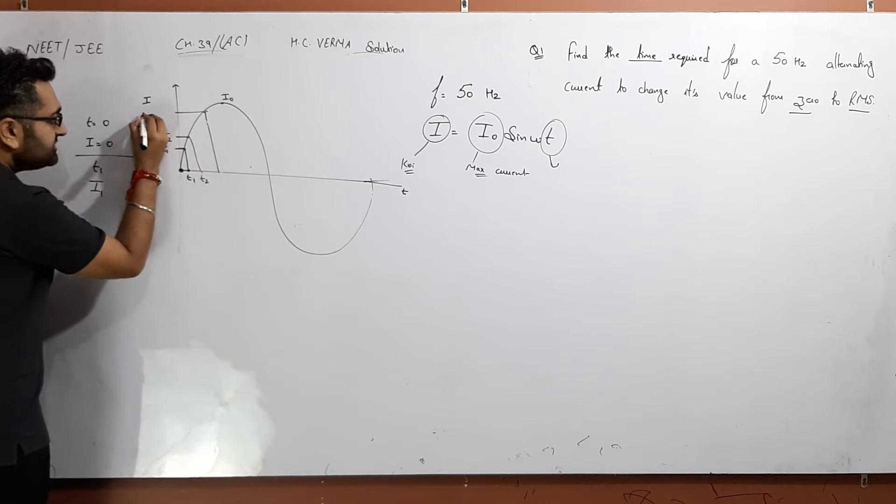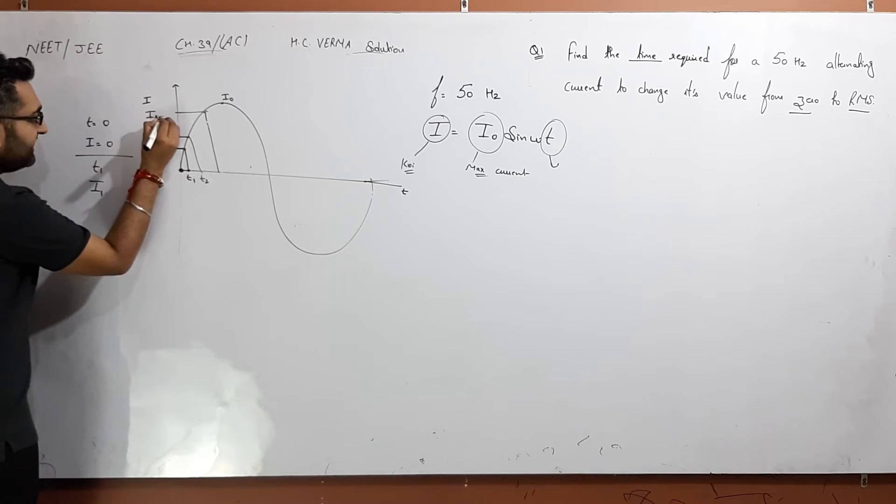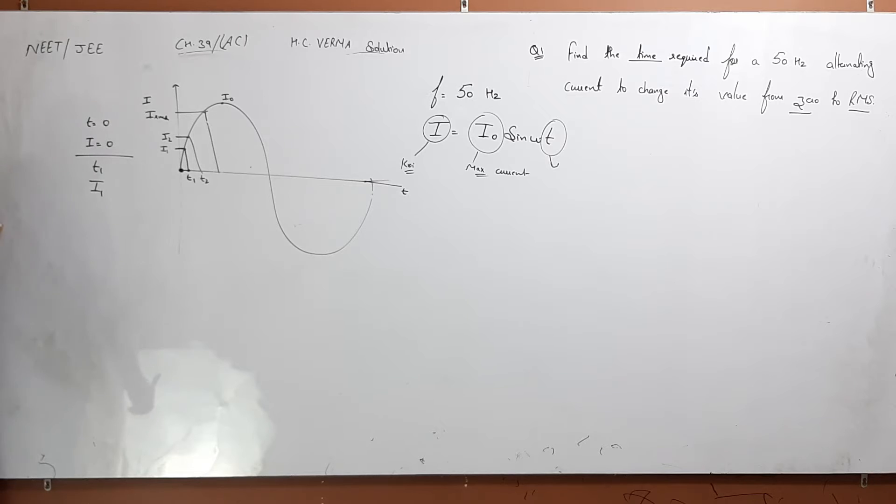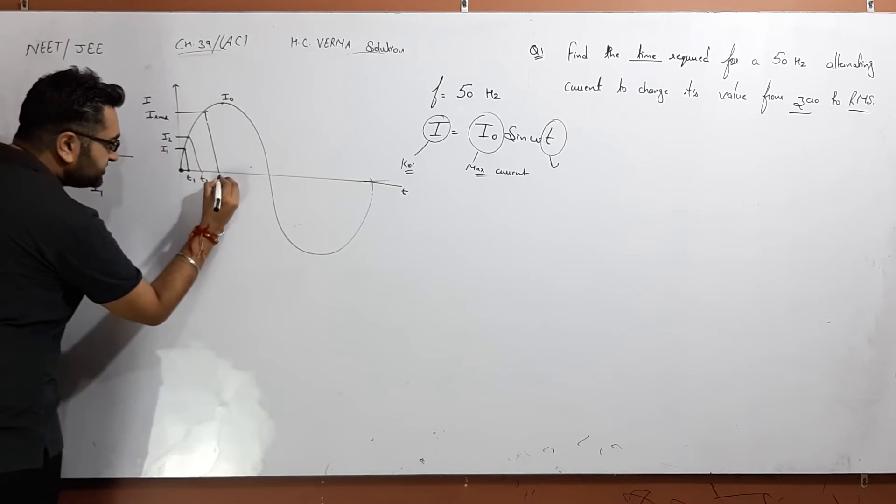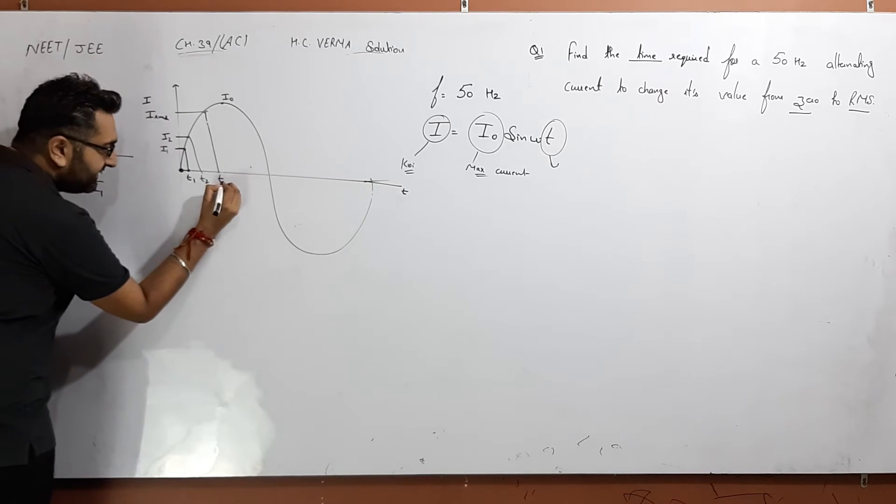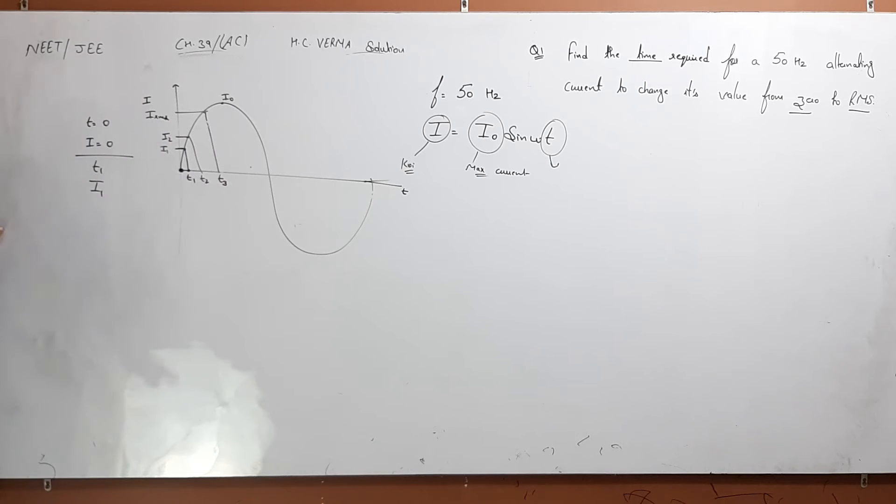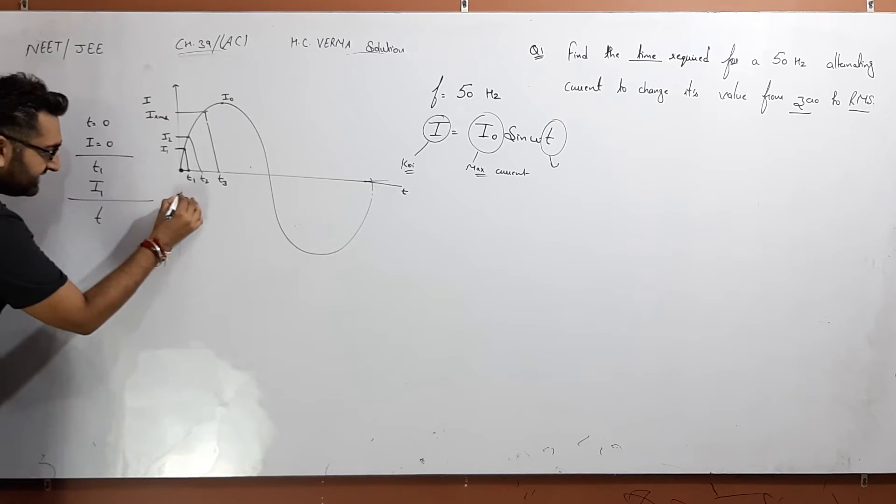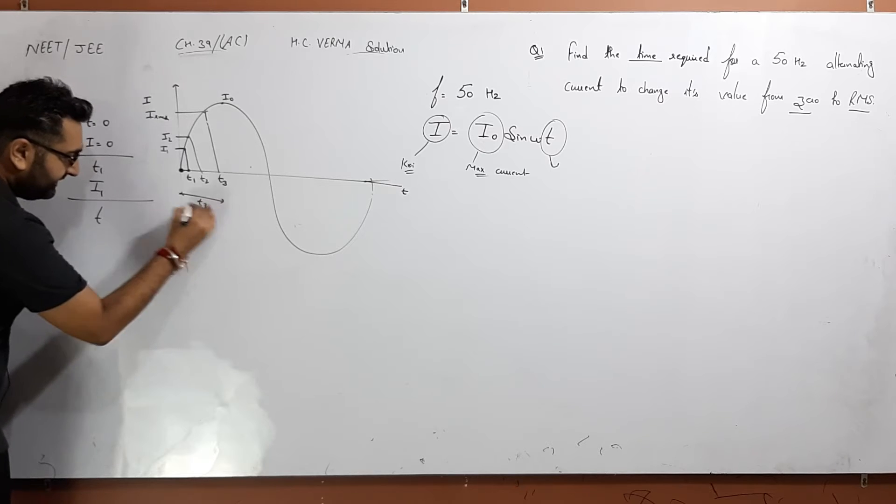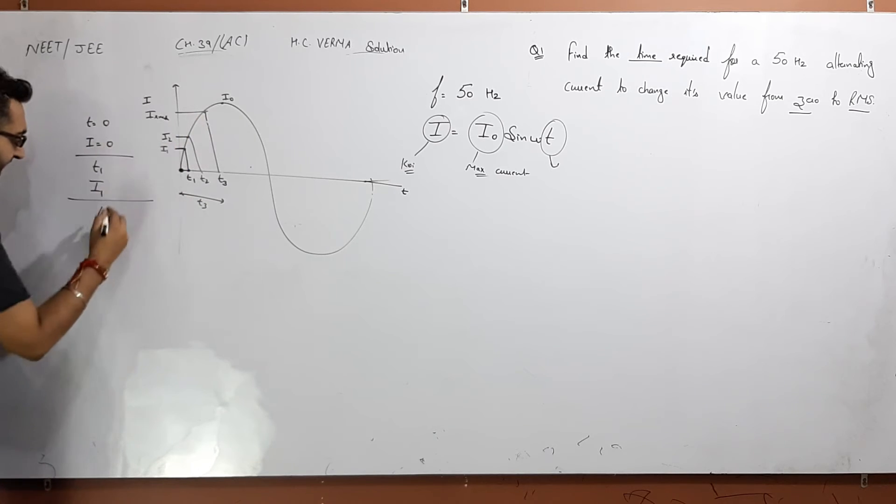Suppose on this point, the current value is IRMS and the time is T3. So T3 is the time and this current is IRMS.